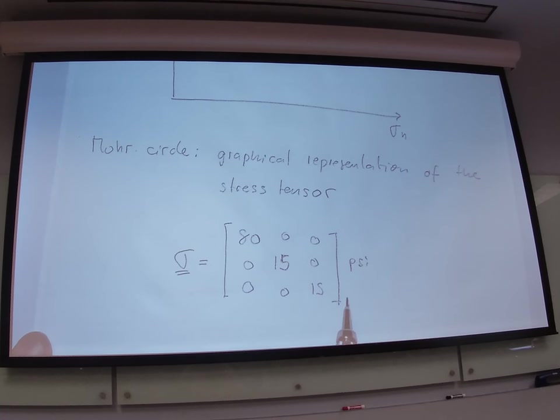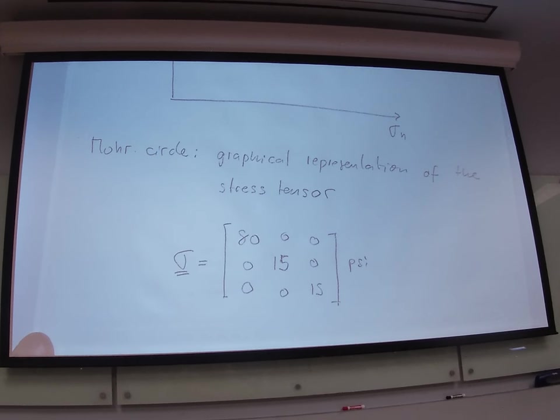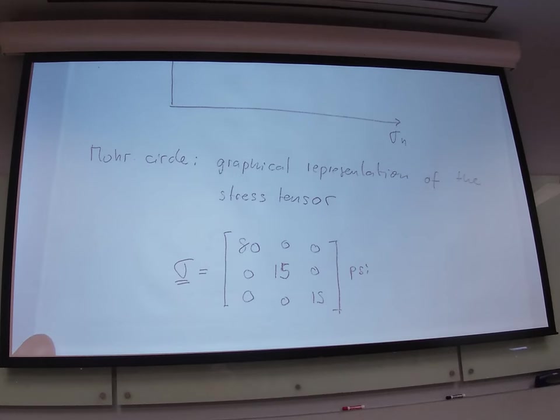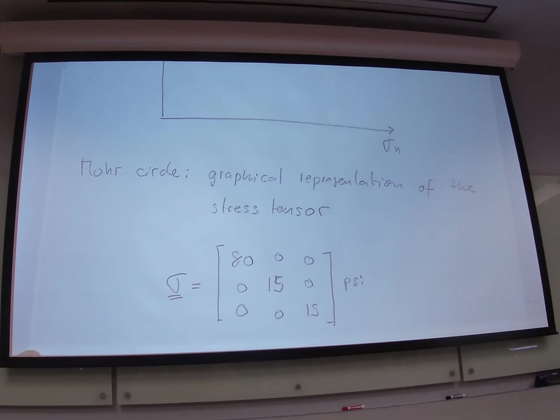So, the Mohr circle is just a graphical representation of this. And what we do in the Mohr circle is we draw those stresses, and I'm not going to ask you a lot about the Mohr circle, but you have to understand what's going on in there. So, the most important thing is that you have to remember, are these principal stresses? Yes. Why? Because there is no shear. So, all of these are principal.